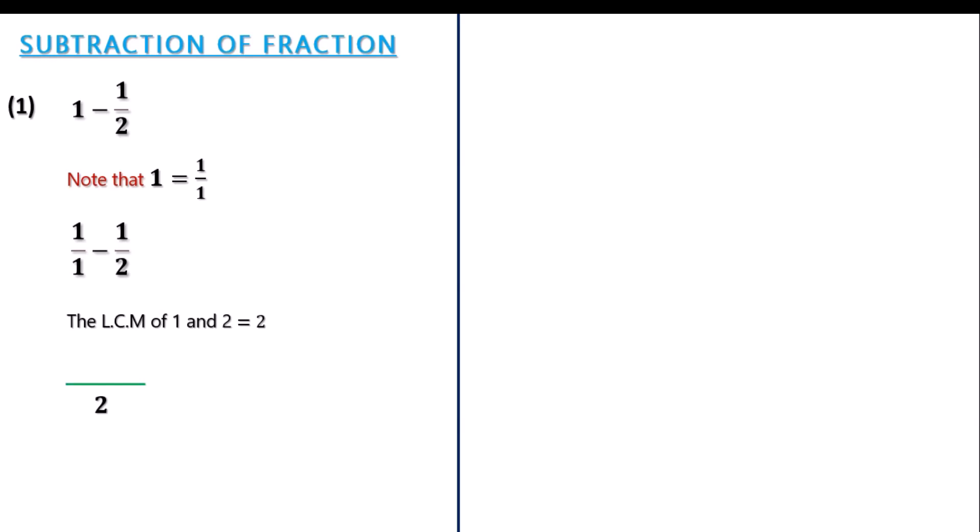You draw the dividing line and put the LCM at the new denominator, which is 2. How many times does the first denominator of the first fraction go in the LCM? It's 2. Then you multiply it by the numerator of the first fraction, which is 1. It still gives us 2.